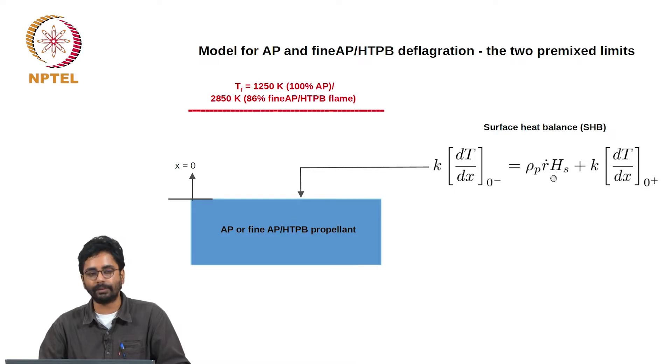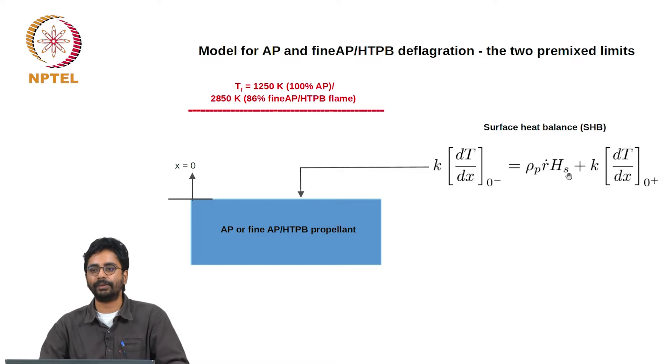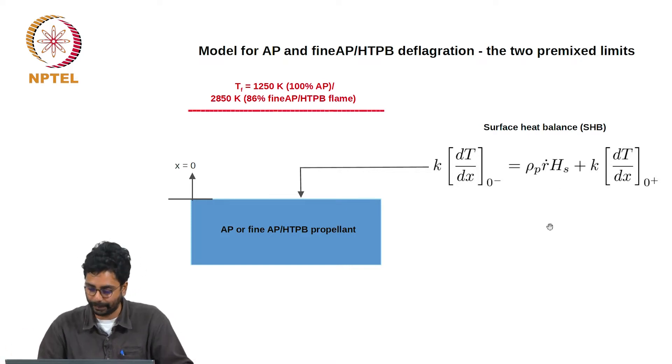Here positive values of Hs are taken to be exothermic, negative values are taken to be endothermic, and therefore the term appears on the right just for consistency.